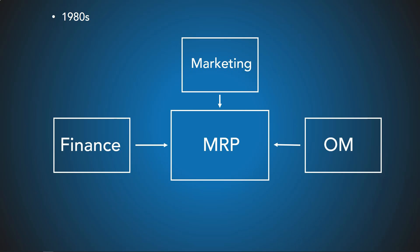Let's move on to the 1980s. Over time, some additional modules were integrated into the MRP software, like finance and marketing, so that companies could forecast the demand of the product and plan manufacturing accordingly. They called the updated software MRP2, or Material Resource Planning. MRP is about streamlining the existing manufacturing process, while MRP2 is about forecasting and planning.